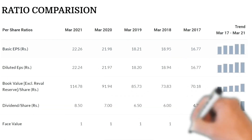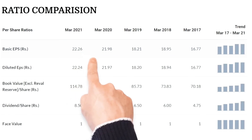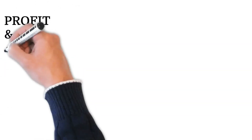Now let's look at the ratio comparison for the last five years. Looking at basic EPS — Earnings Per Share — you can see a growing trend from 2017 onward. In 2017 it was around 16.77 rupees, it went up to 22.26 rupees, and even in the last two years, compared to 2019's 18 rupees, it has still grown. Irrespective of COVID, Pidilite has seen growth in EPS — a solid result.